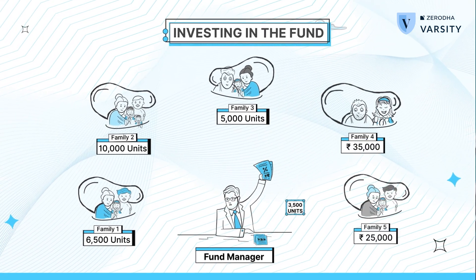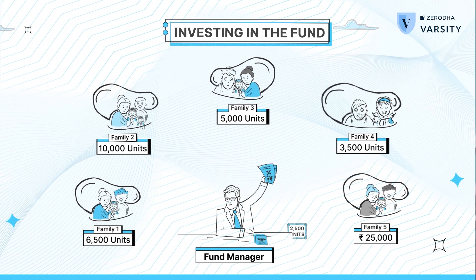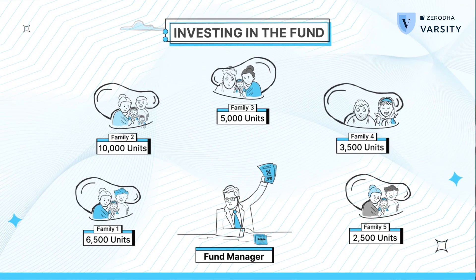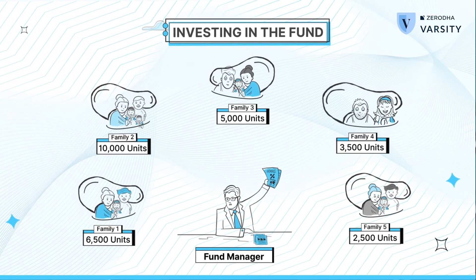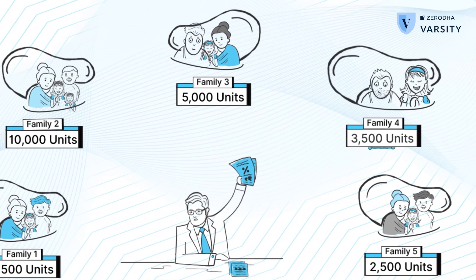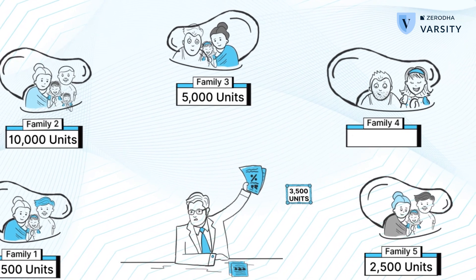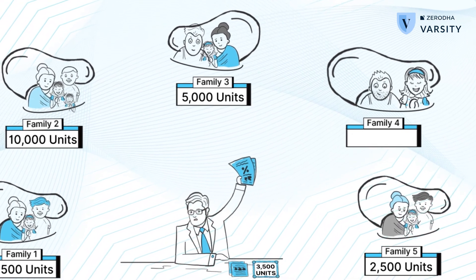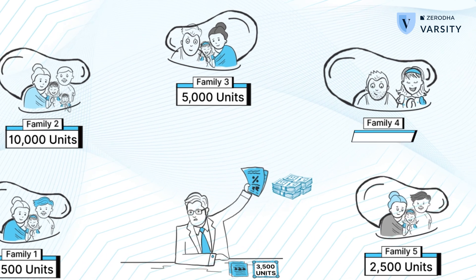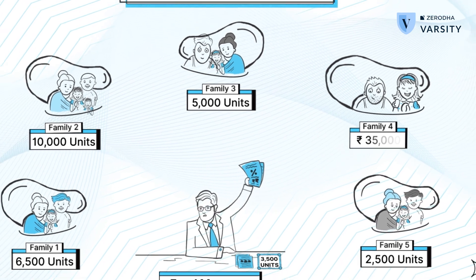Family 4 and 5 get 3,500 and 2,500 units respectively. Now let's assume family 4 immediately changes their mind and wants to withdraw all the funds invested. They will have to surrender 3,500 units to the fund manager at the rate of 10 rupees per unit and get back 35,000 in exchange.